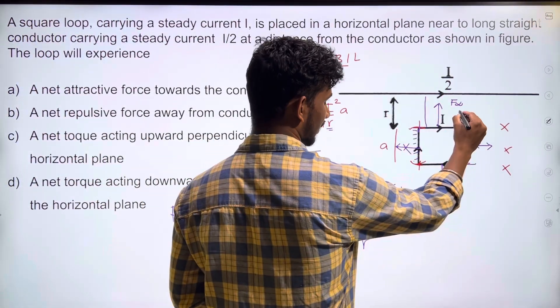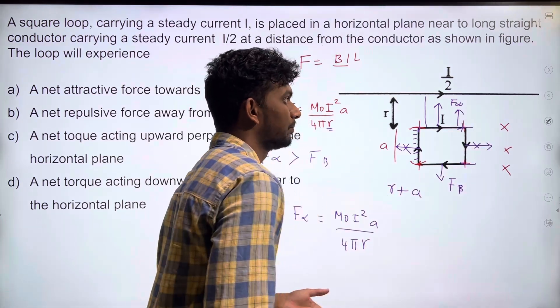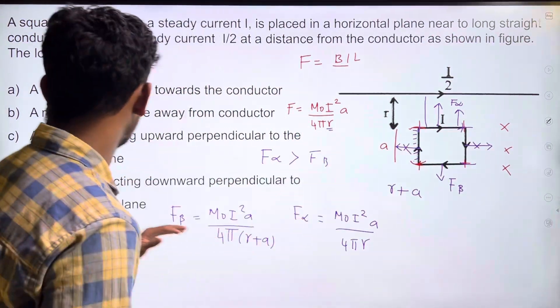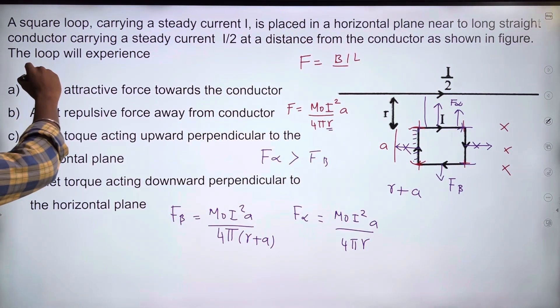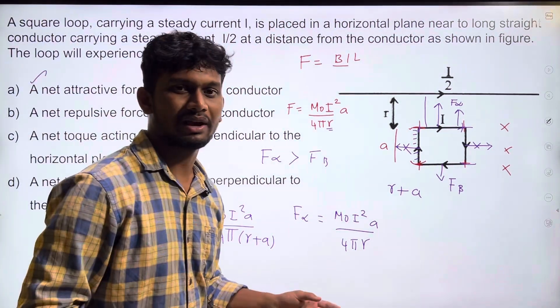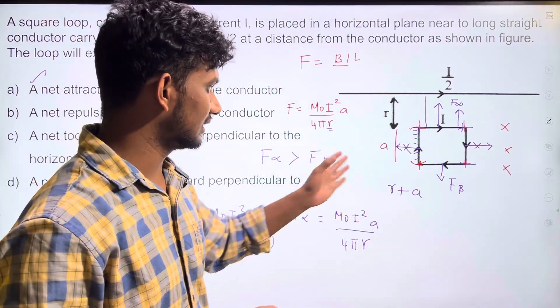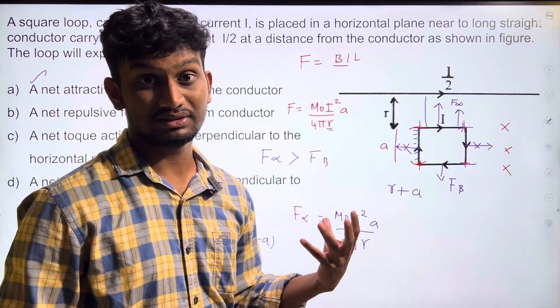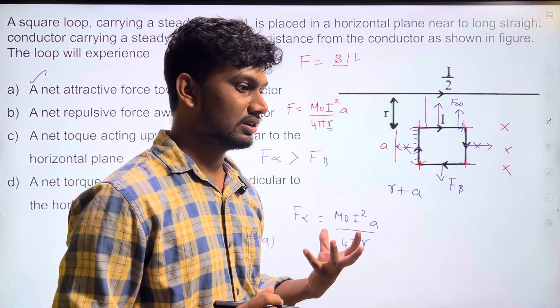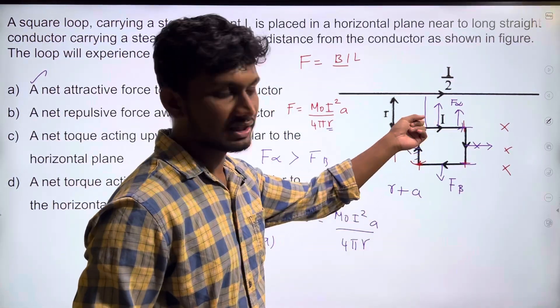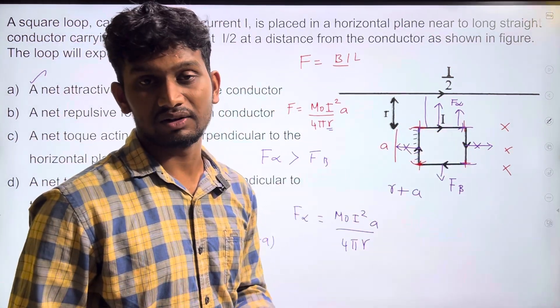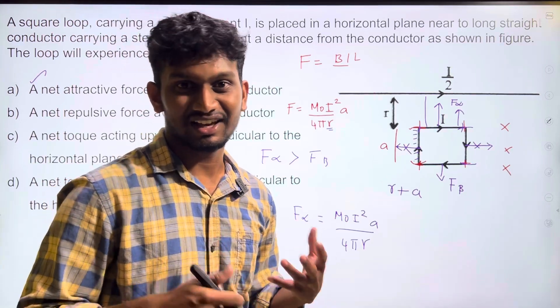So the current loop will move in the upward direction. The answer is: an attractive force towards the conductor. There may be confusion, so practice this type of problem.